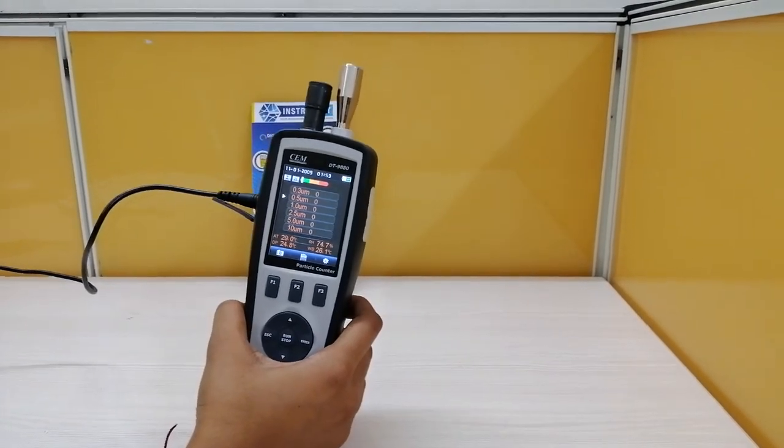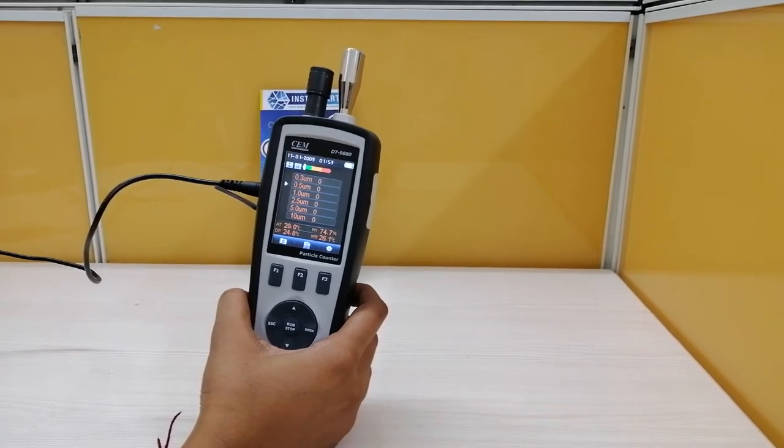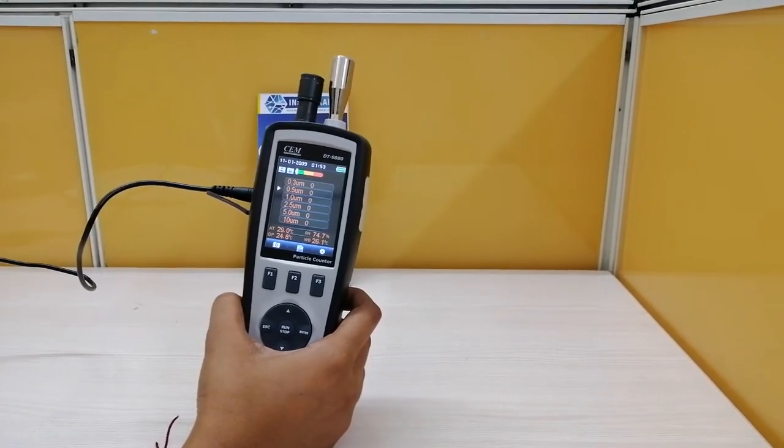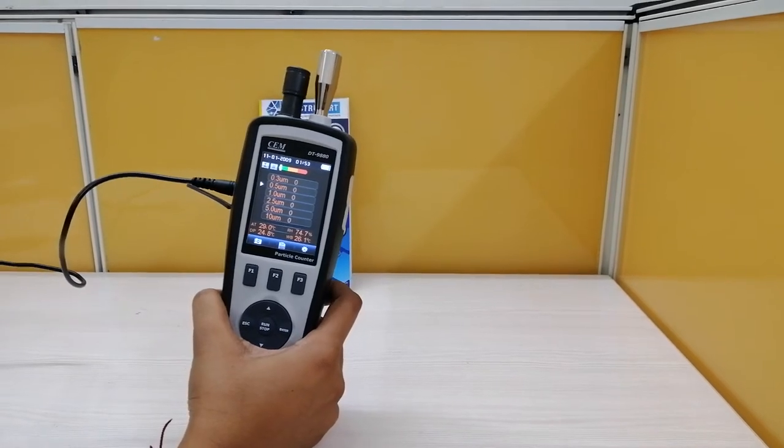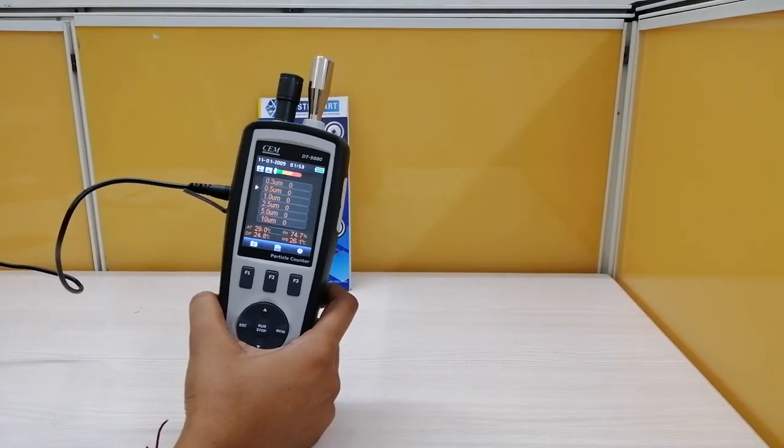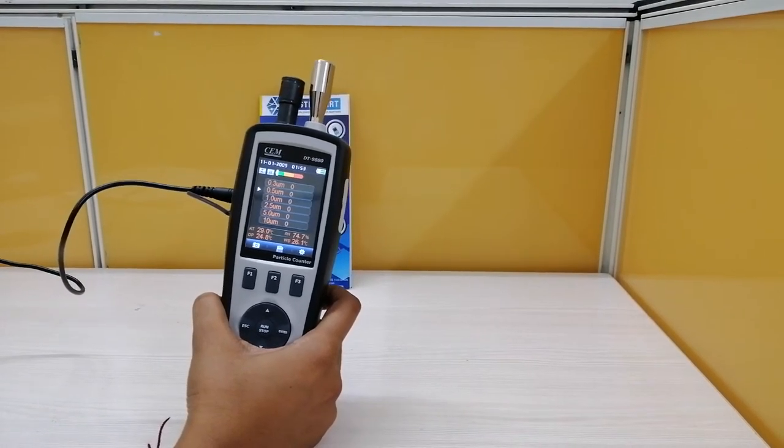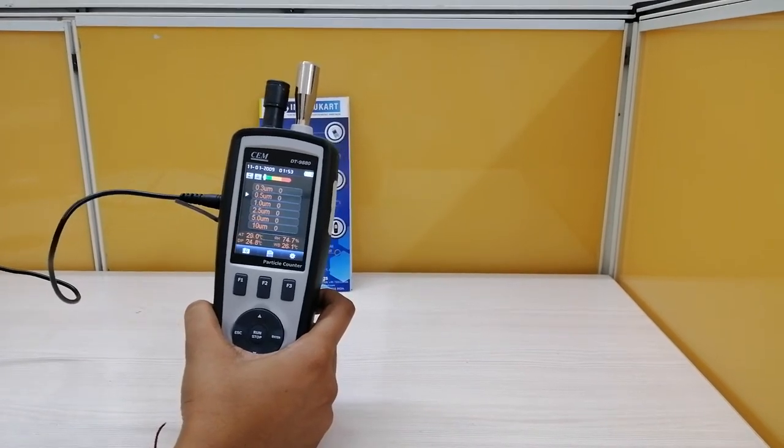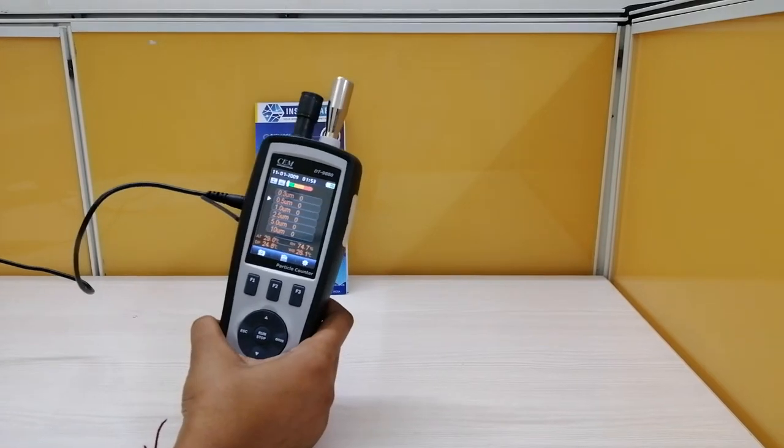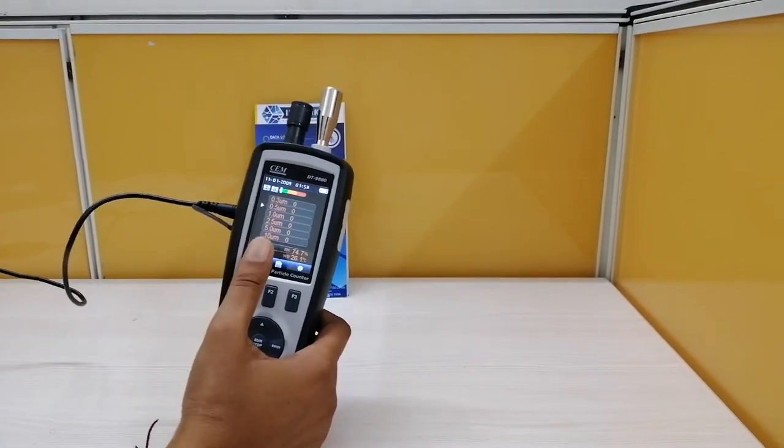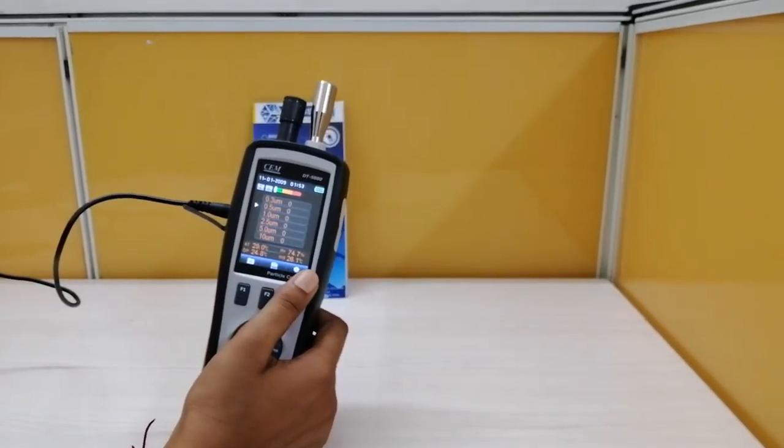This particle counter can measure in three different types of sampling modes: cumulative, differential, and mass concentration. Based on your application, you can choose the sampling mode. But let me explain what is cumulative sampling mode. When viewing the data in cumulative mode, the number or the counts associated with each channel size is the number of particles that the instrument counted for that size and greater.